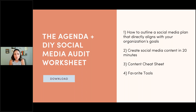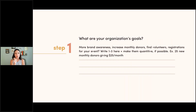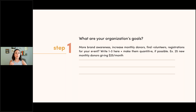Does everybody have a pen or piece of paper? This is the time to take notes. We're going through five steps, so leave some space for each. Step number one: think about what are your organization's goals. These are your business goals — every six months or annual. Examples: more brand awareness, increase monthly donors, find volunteers, registrations for an upcoming event. Think about one to three goals and make them as quantitative as possible.